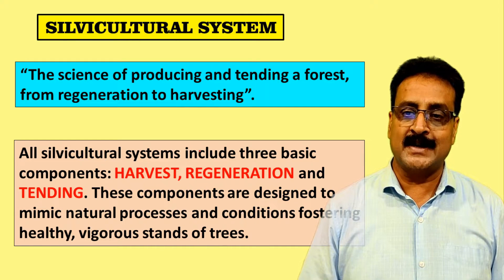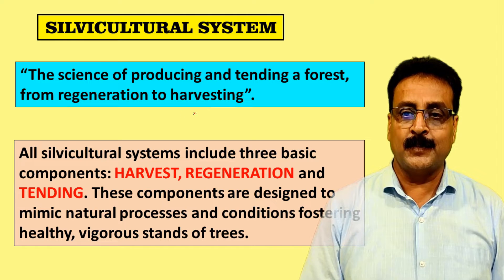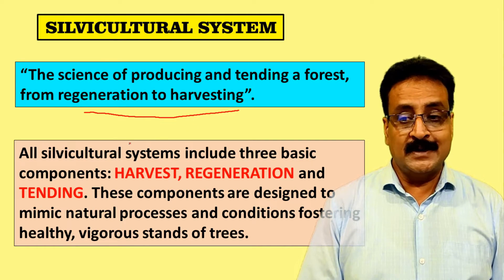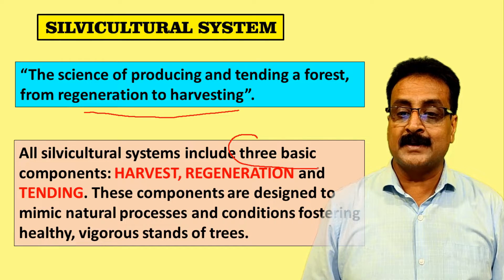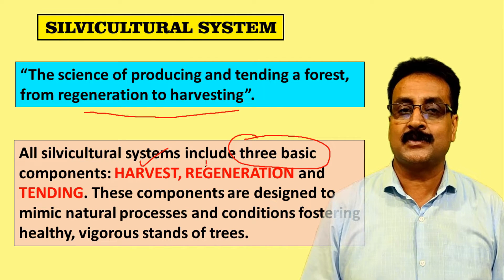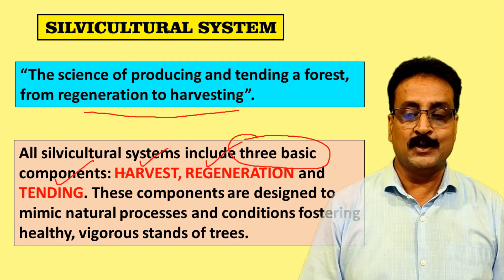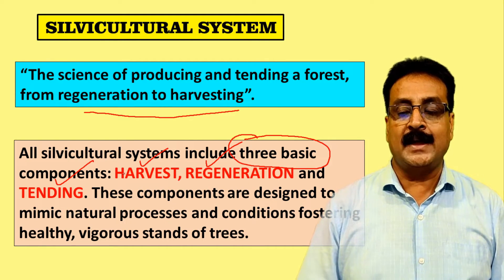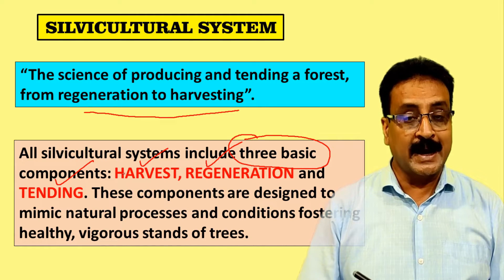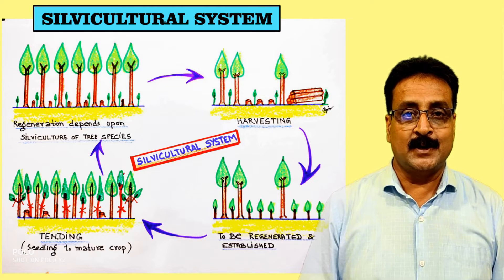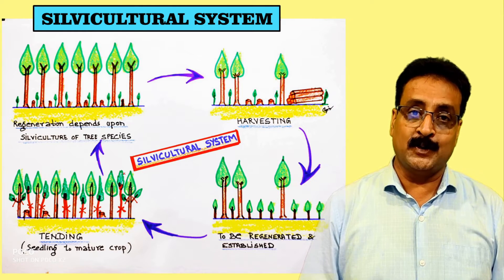A silviculture system is the science of producing and tending a forest from regeneration to harvest. It includes three basic components: first is harvest, then regeneration, then tending. These components are designed to mimic the natural processes and conditions fostering a healthy, vigorous stand of trees.